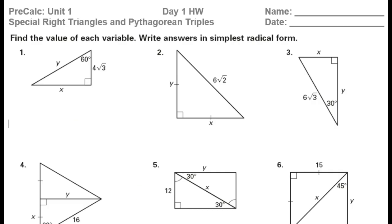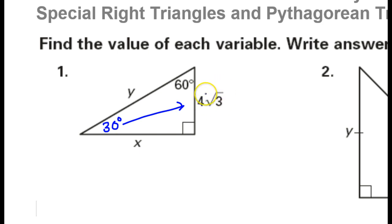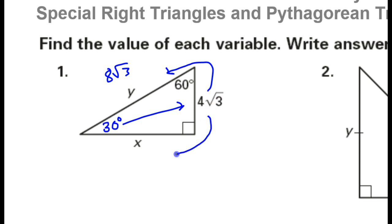Let's take that background knowledge and solve these questions. I see this is 60, so that means this must be the 30. That means that this is the short leg right here. If this is the short leg, the hypotenuse should be double that. So if I double this, that's going to give me 8 radical 3.